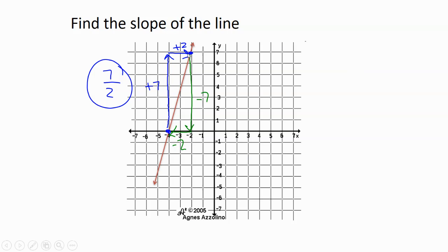If I did it the other way, if I started at the point way up here, I'd go down seven, left two. And if I wrote that, the two negatives cancel out. It's still seven over two. You can see we're still getting the same answer.